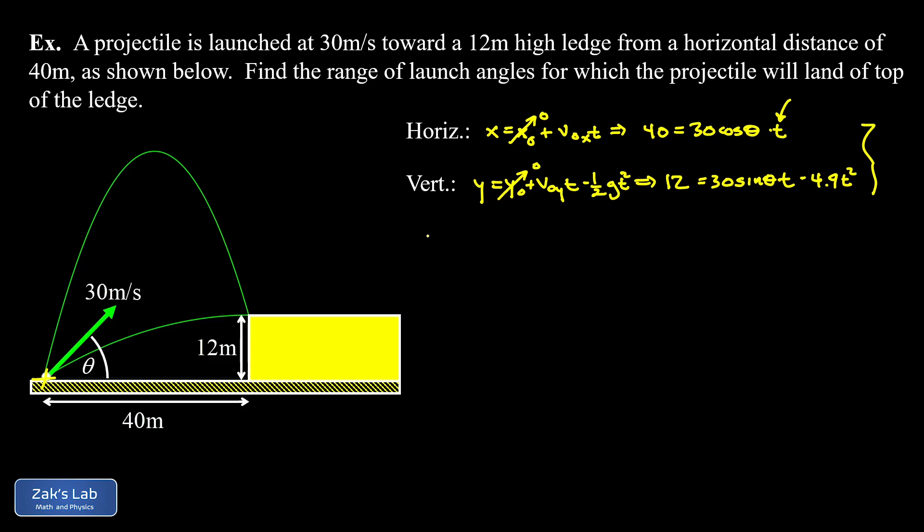If we take that horizontal equation and solve for t, that's going to be 40/(30cos(θ)), but I'd rather write it as 4/(3cos(θ)), just canceling a factor of 10.